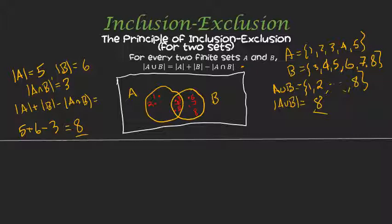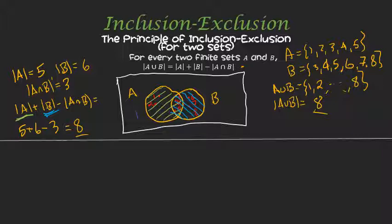We want to understand why this works. When I count the elements of A, what am I counting in the Venn diagram? I'm counting every element in the A blob — including part of the intersection. Then when I add up B, I count the elements in the B blob. Notice that the elements in the intersection have now been counted twice. Everything in A not B has been counted once, everything in B not A has been counted once, and things in the intersection have been counted twice. But in A union B, we don't include duplicates. So to get distinct values, I want to subtract off one intersection — change that two to a one — and so that means subtracting off A intersect B. That's why it works.